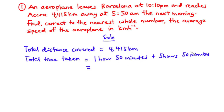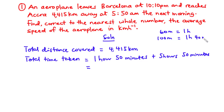Now 50 minutes plus 50 minutes is 100 minutes, and we know that 60 minutes is equal to 1 hour. Therefore, if we have 100 minutes, that is 1 hour 40 minutes. We are going to add 1 plus 5 to get 6, plus this 1 hour gives us 7 hours. So the total time taken is 7 hours and 40 minutes.